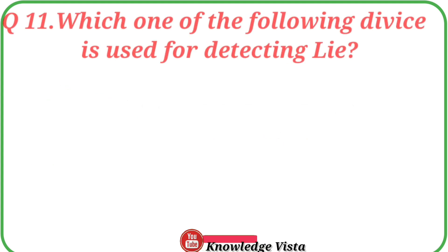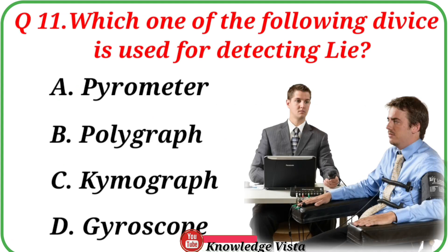Question number eleven: Which one of the following devices is used for detecting a lie? Option A: Pyrometer, B: Polygraph, C: Chemograph, D: Gyroscope. Correct answer is option B: Polygraph.